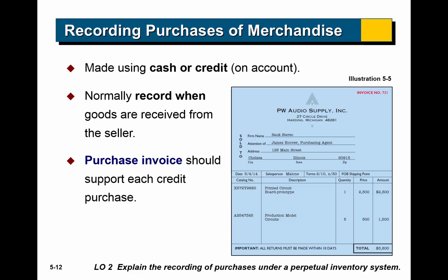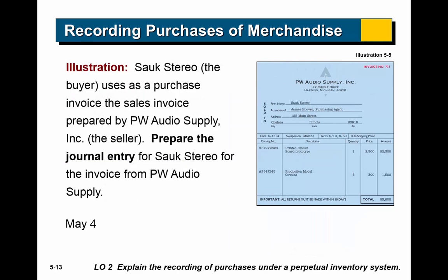Here's what we do when recording a purchase, assuming a perpetual inventory system. When we deal with our supplier — the person who sells us goods we'll resell to customers — we record the purchase when we receive the goods from the seller. Usually you receive a purchase invoice, which is the source documentation for the transaction. In the example, Sock Stereo purchased merchandise from PW Audio Supply, Inc. The journal entry: inventory account increases by $3,800 (our cost), and accounts payable increases by $3,800.